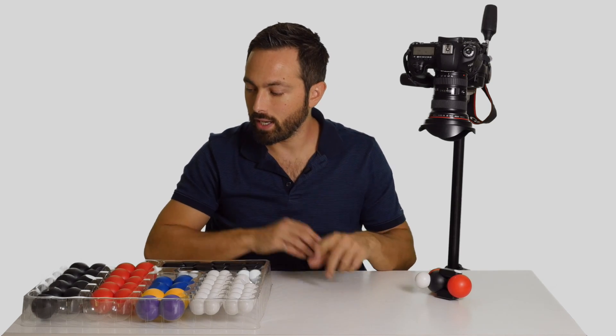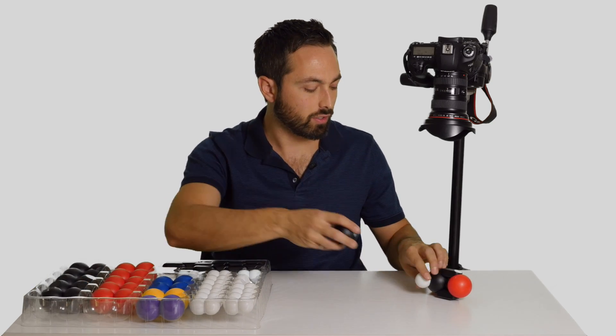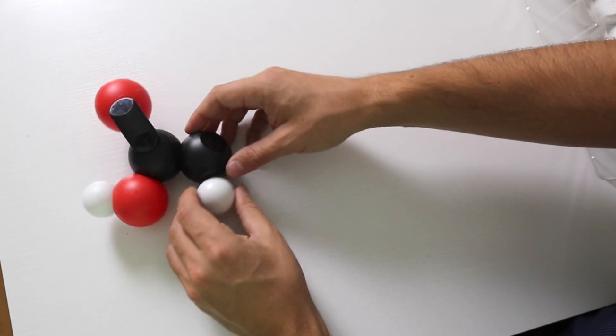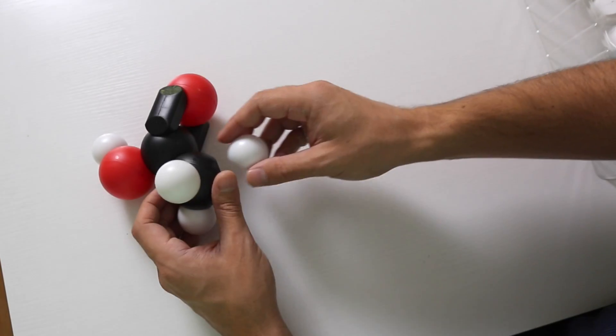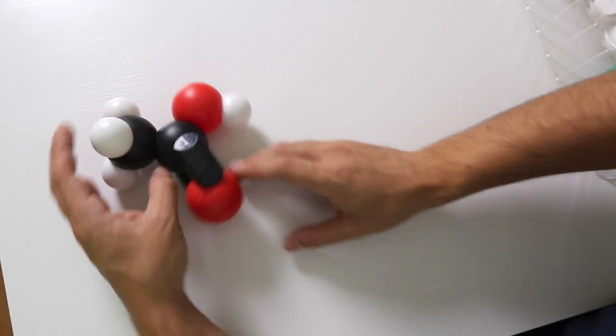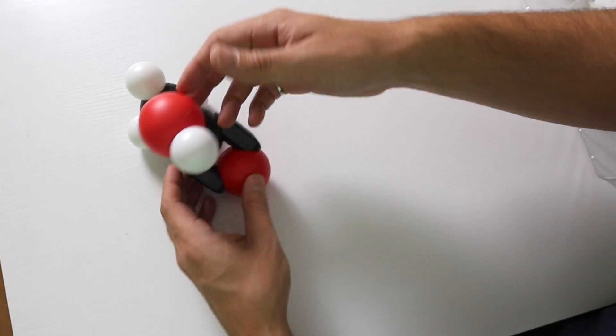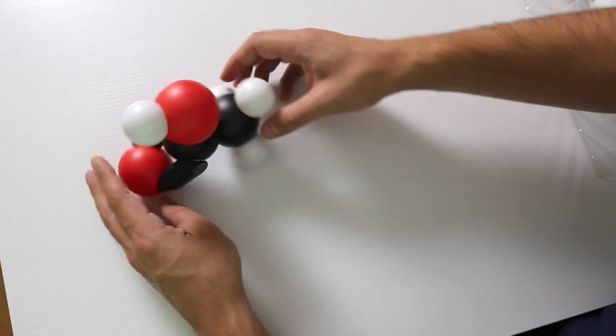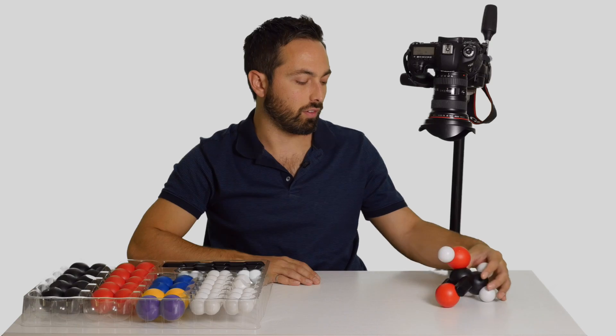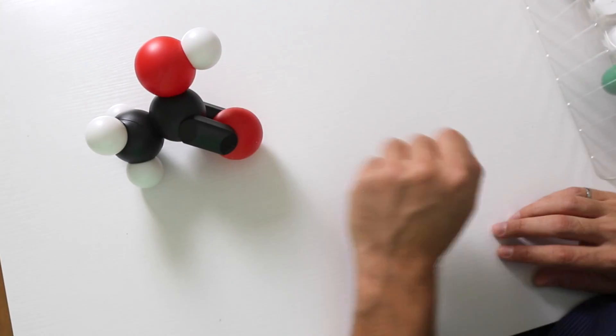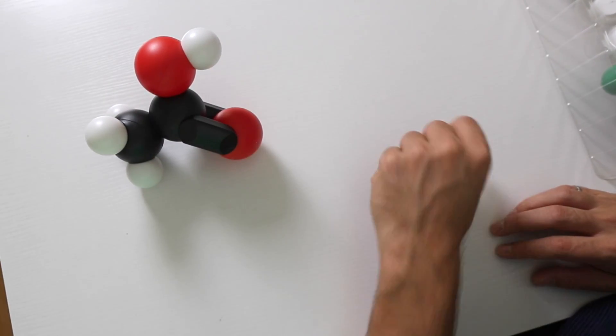Let's have a look at ethanoic acid. So we add a second carbon, turn this into ethanoic acid, and this is one of the major components of vinegar. So vinegar is made up significantly of this carboxylic acid called ethanoic acid.